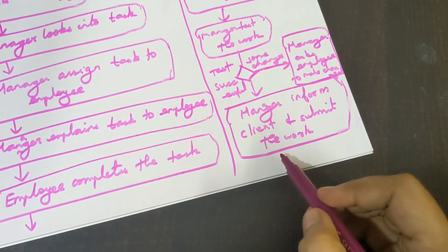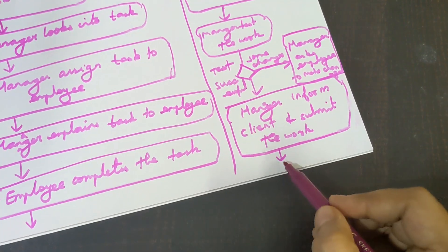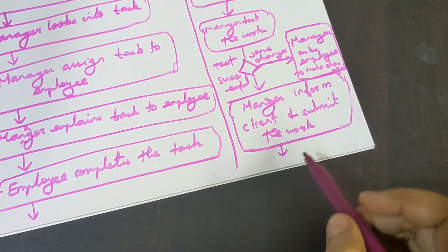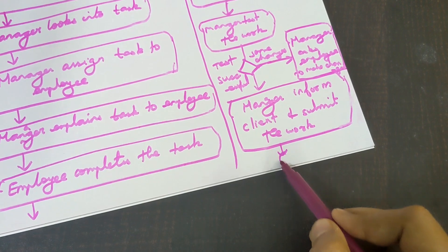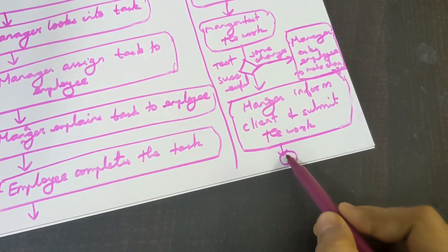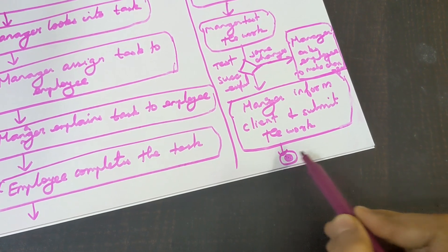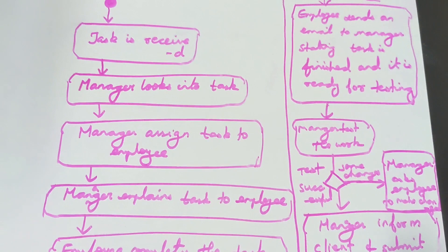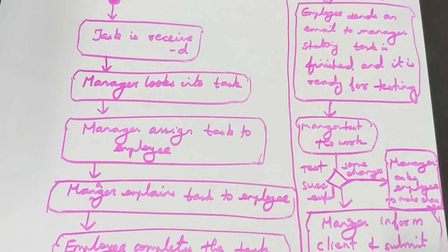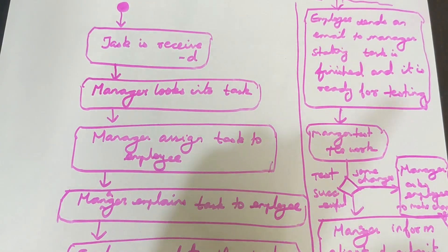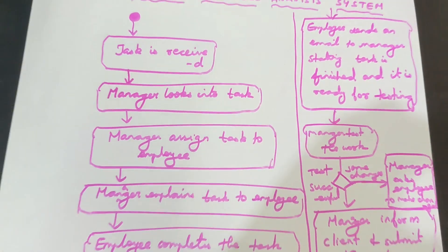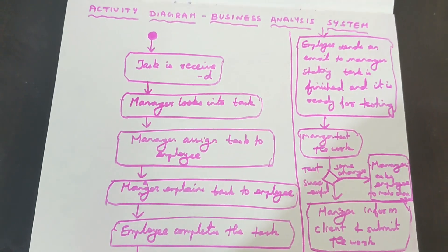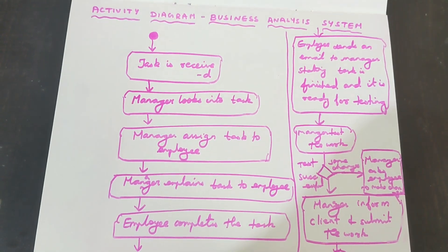After this, the last step is the process ends. The symbol for that is a bigger circle with a smaller circle inside, and you color only the smaller circle. So this is the final diagram for the business analysis system activity diagram.